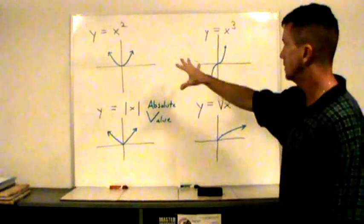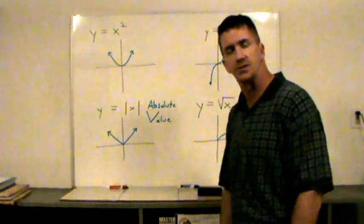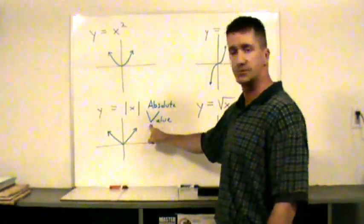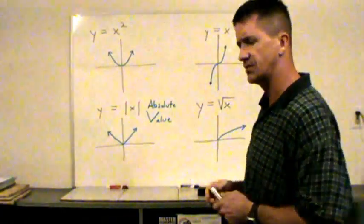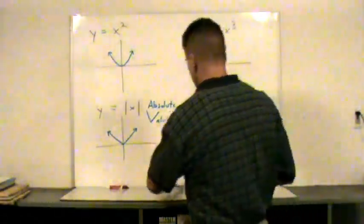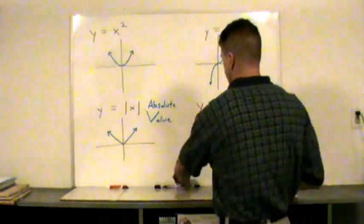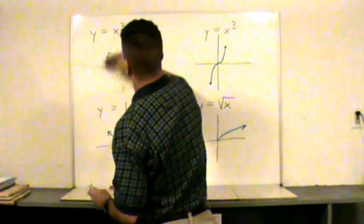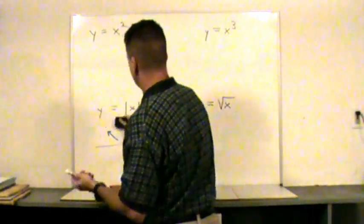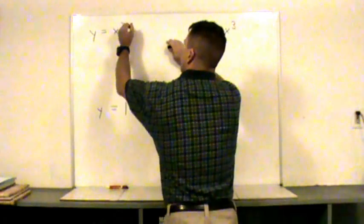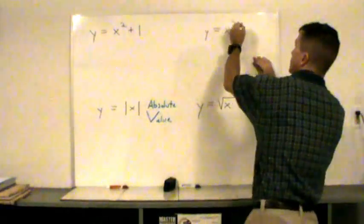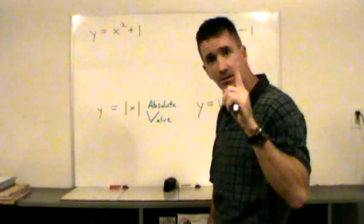We can talk about the transformation of these functions - what makes them shift up and down or left and right. Let's start with the up and down or vertical shifts. So let's say I've got x squared plus one. That's going to make that function shift one upward. x cubed minus one will shift one unit downward.